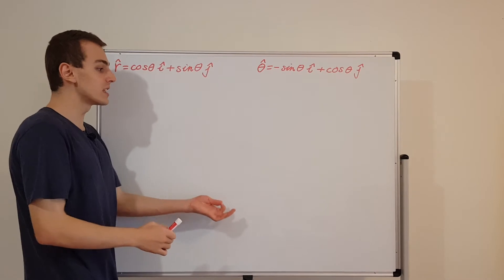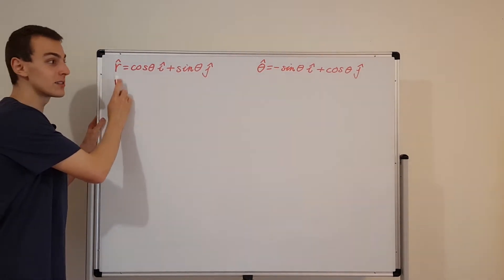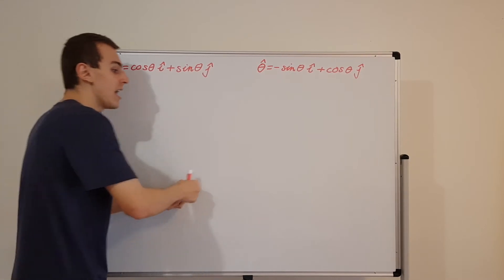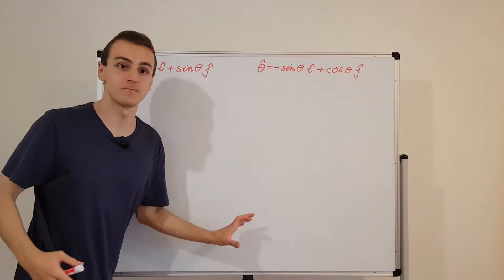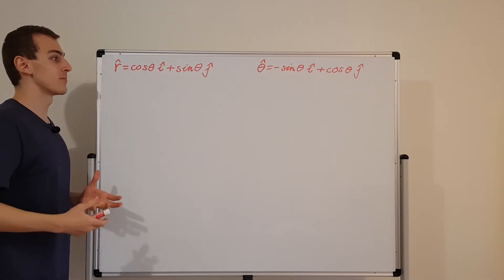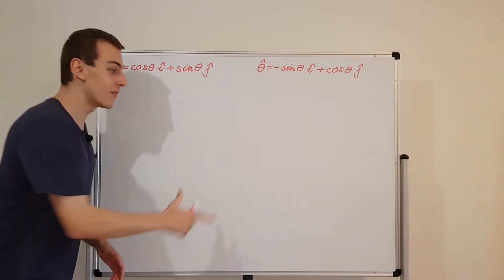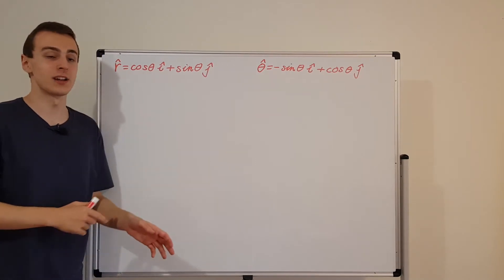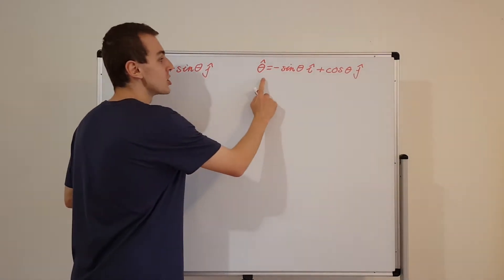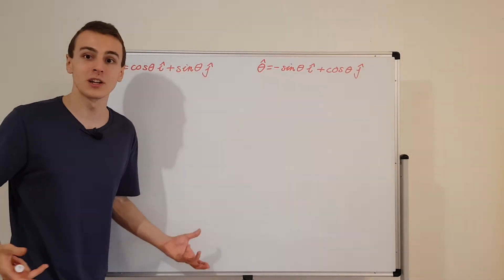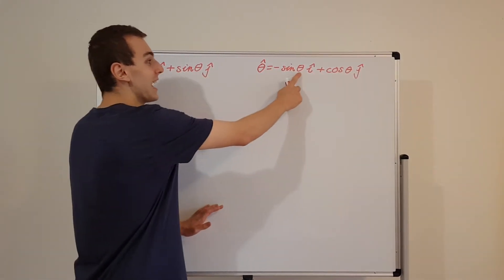In polar coordinates, the angle of the particle relative to the origin determines where the radial direction is and where the tangential direction is. The radial direction points toward wherever the particle is relative to the origin. i hat and j hat are fixed and always point in the same directions, but r hat and theta hat point in different directions at different times because the particle can be at different angles, and those angles can be time dependent.